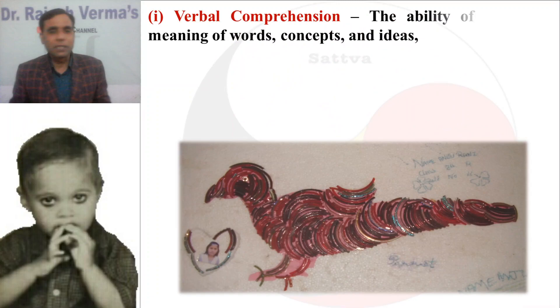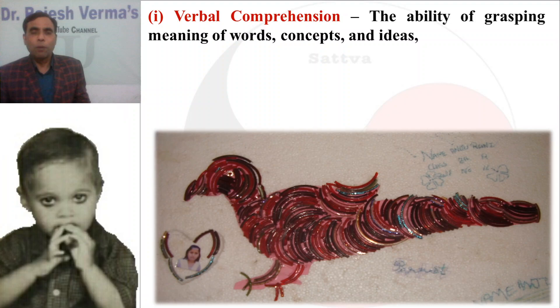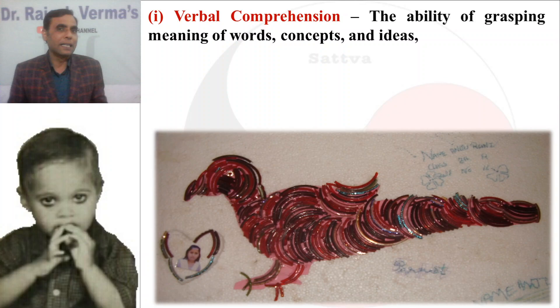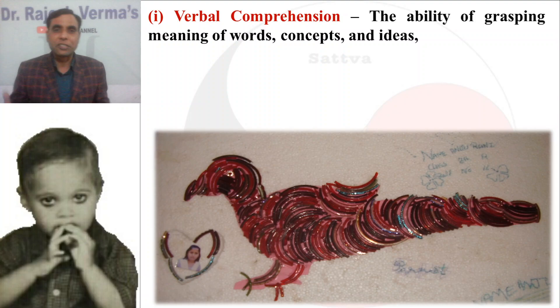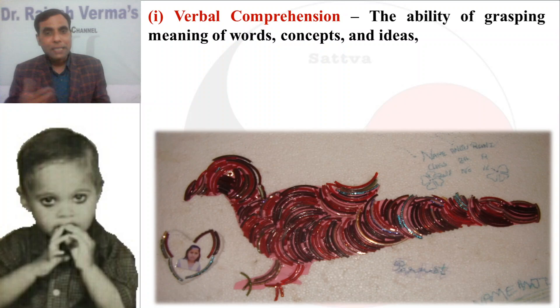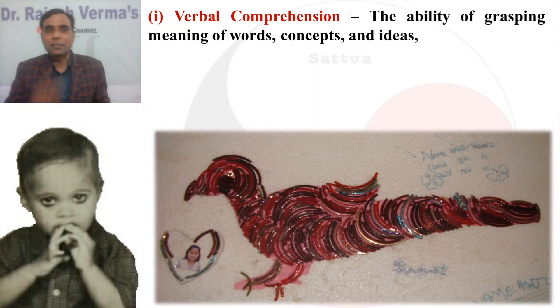The first primary mental ability is verbal comprehension — the ability of grasping the meaning of words, concepts, and ideas. Whatever the meaning of words you are able to grasp, or formation of various concepts such as concepts of birds, drawing, furniture, or education — these are the outcome of verbal comprehension. The words which we are reading, listening, and speaking are the result of this cognitive component of intelligence.